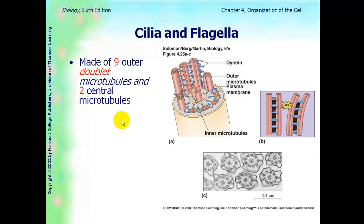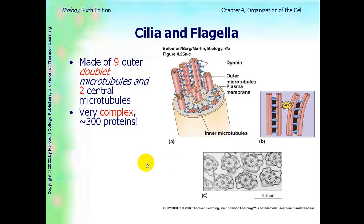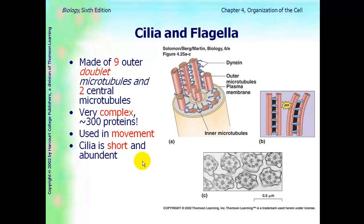Cilia and flagella are made of nine outer doublet microtubules and two central microtubules. Both have the same structure and are very complex — more than 300 proteins are involved. Both are used for movement. The difference is that cilia are short and there are a lot of them, while flagella are long and there are few per cell.